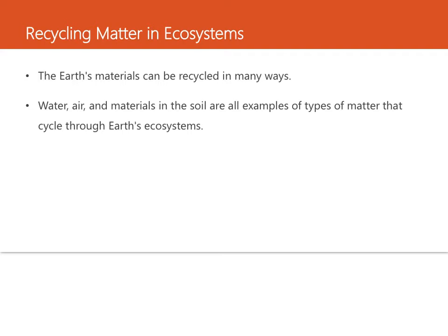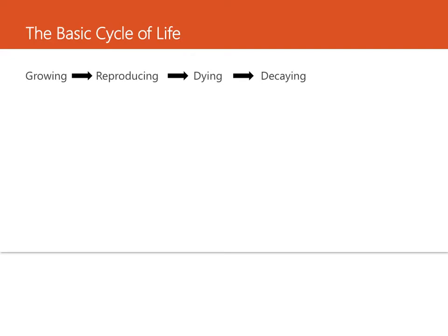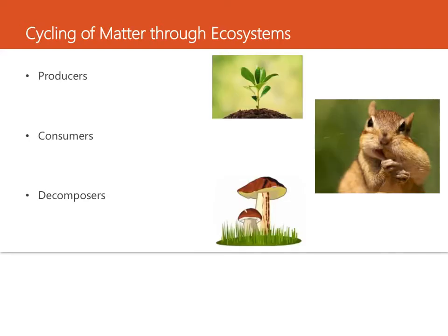Let's talk about recycling matter in ecosystems. The earth's materials can be recycled in many ways — water, air, and materials in the soil are all examples of matter that cycle through earth's ecosystems. All living things go through basic life cycles containing these stages: growing, reproducing, dying, and decaying. At any time, some organisms are growing, others reproducing, and others dying or already decaying. As this cycle progresses, matter and energy flow through living and non-living parts of an ecosystem.